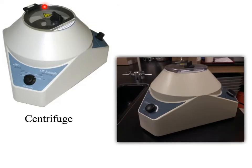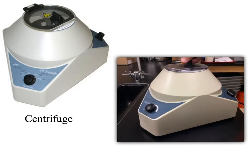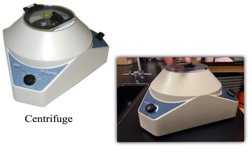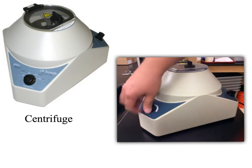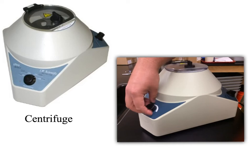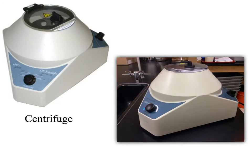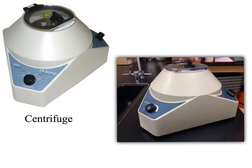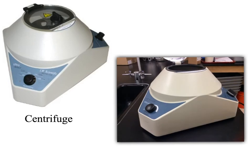This is called a centrifuge, and its function is to separate liquids by density. It has a lid that you open, place your samples inside, then close and lock. One knob adjusts the speed and another adjusts the spin time. One safety issue: you can never open it while it's still spinning. Never put your hand into a moving centrifuge. So the centrifuge separates liquids by density.